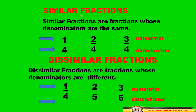Similar fractions are fractions whose denominators are the same. Here are some examples: 1 fourth, 2 fourth, 3 fourth. As you can see, 1, 2, and 3 are numerators and the denominators are all 4. So, class, 4 is the denominator and they are all the same. That is what we call similar fractions.